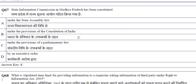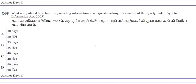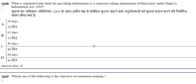The State Information Commission in Madhya Pradesh has been constituted under the provisions of parliamentary law. The stipulated time limit for providing information to a requester asking about third-party information under the Right to Information Act is 40 days — please remember this important question.